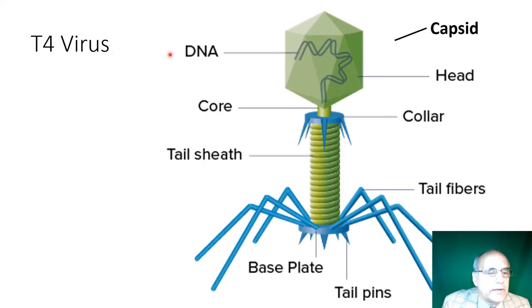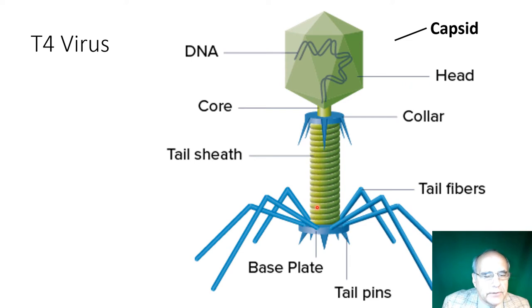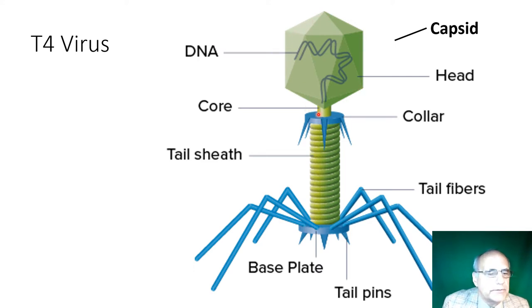The T4 virus I equate to a lunar lander. In this particular model it shows the DNA enclosed and encapsulated in what we call a capsid — that's just the protein coat. It has a shaft, base plate, and tail pins. These tail pins are how it attaches to its victim.